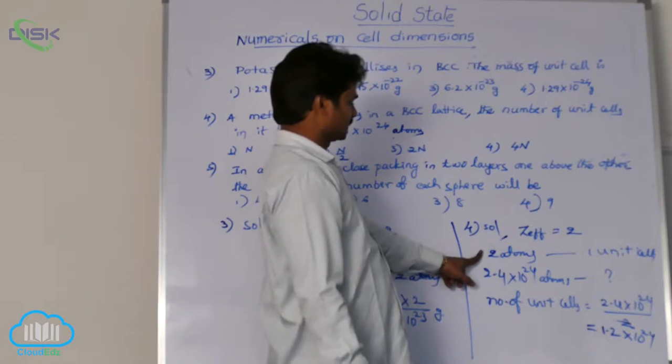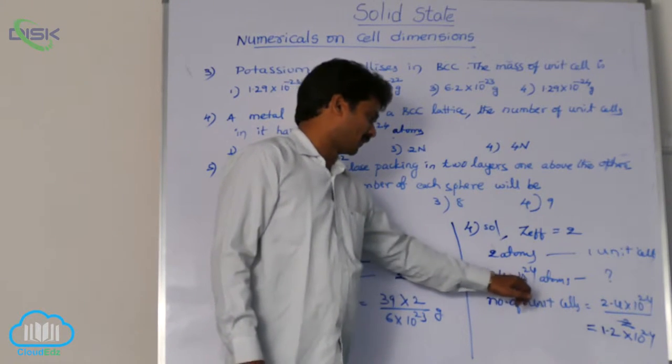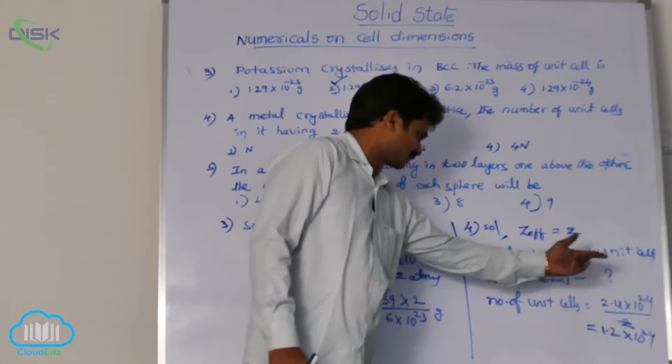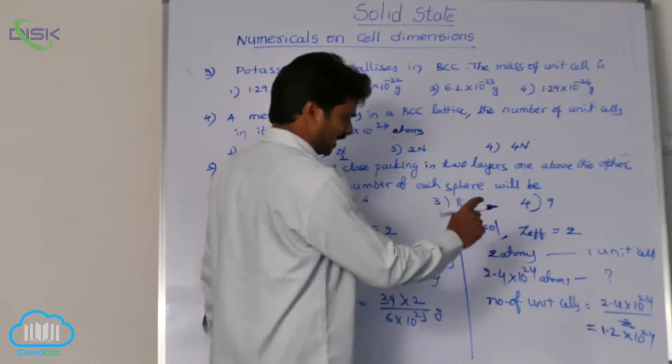If 2 atoms form 1 unit cell then 2.4 into 10 power 24 atoms form how many unit cells? Cross multiplication: 2.4 into 10 power 24 by 2.